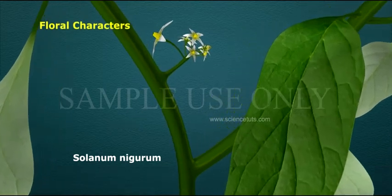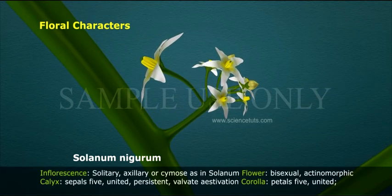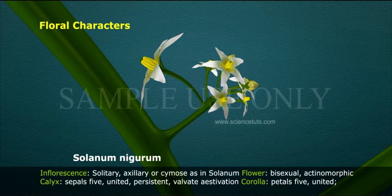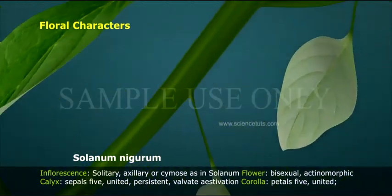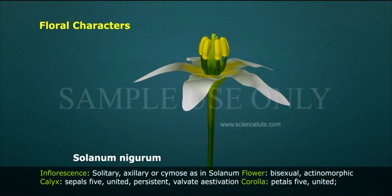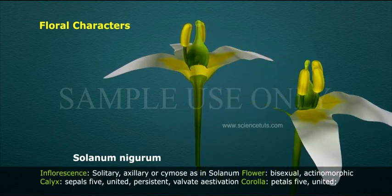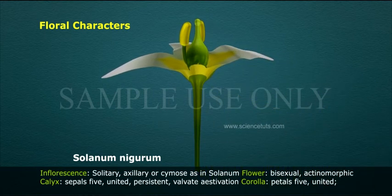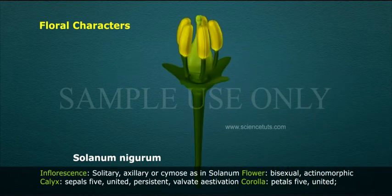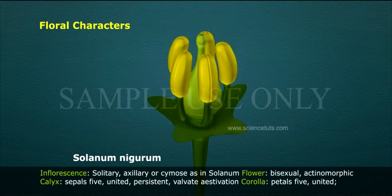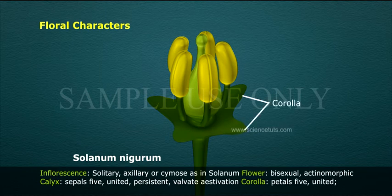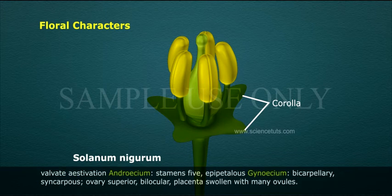Floral characters: Inflorescence solitary axillary or cymose, as in Solanum. Flower bisexual, actinomorphic. Calyx: sepals 5, united, persistent, valvate aestivation. Corolla: petals 5, united, valvate aestivation.